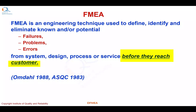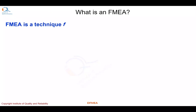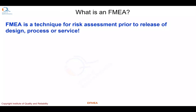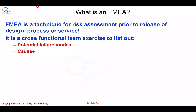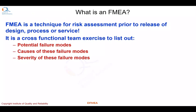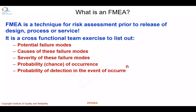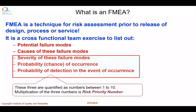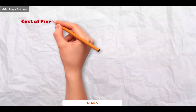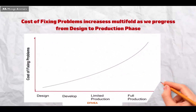The ASQC is now called American Society for Quality, ASQ. FMEA is a technique for risk assessment prior to release of design, process or service. It is a cross-functional team exercise to list out potential failure modes, causes of these failure modes and mechanisms, severity of these failure modes, probability of occurrence of a cause, and probability of detection. These three are quantified as numbers between 1 to 10, and their multiplication is called the Risk Priority Number, or RPN. Cost of fixing problems increases multifold as we progress from design to production phase.